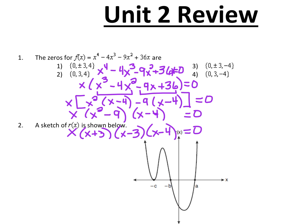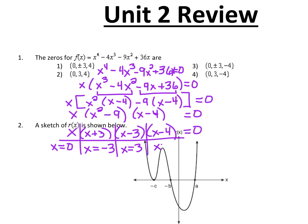Now in Unit 1, when it said to factor, these would be your factors and you'd just stop. But here we're finding the zeros, so we want to solve for what values of x make this equation true. This is where we take it an extra step and make our t-chart. So we wind up with x equals 0, x equals negative 3, x equals positive 3, and x equals 4. So 0, plus or minus 3, and 4 — that's choice 1.